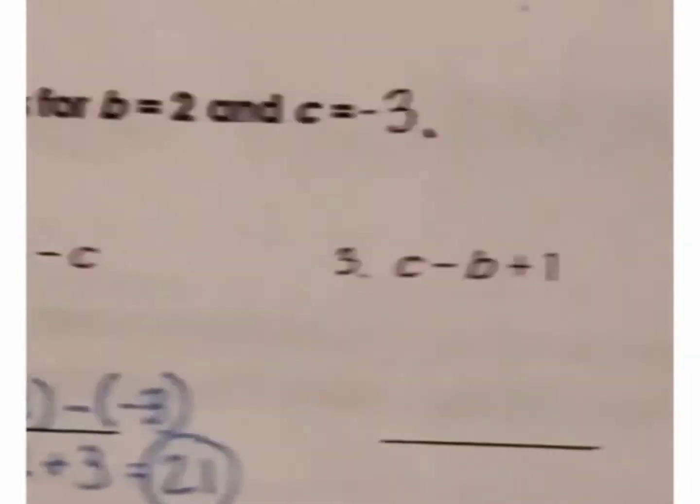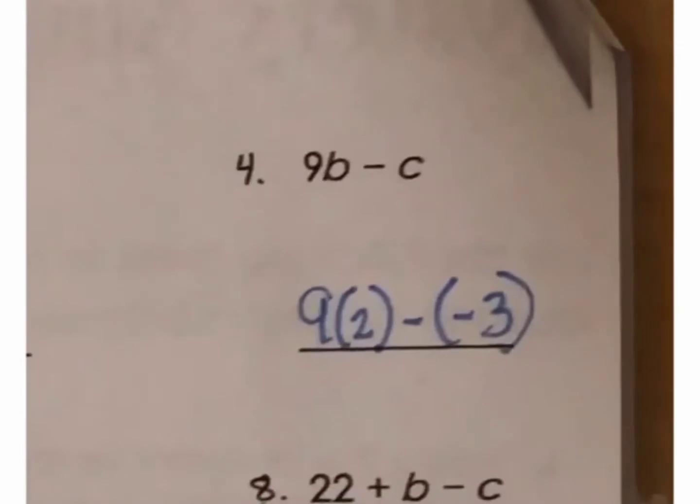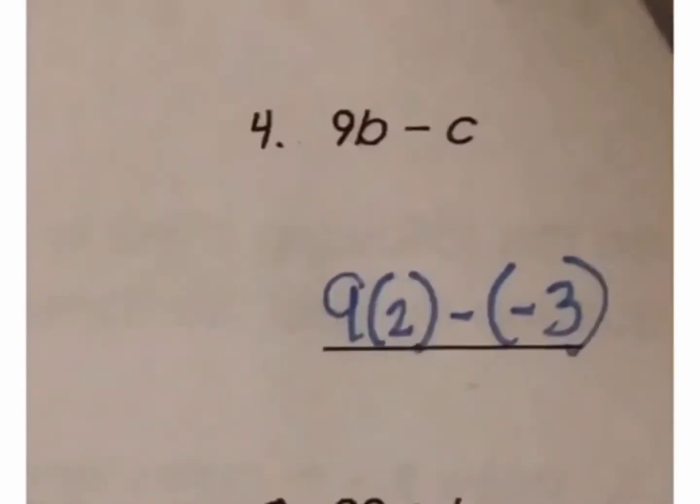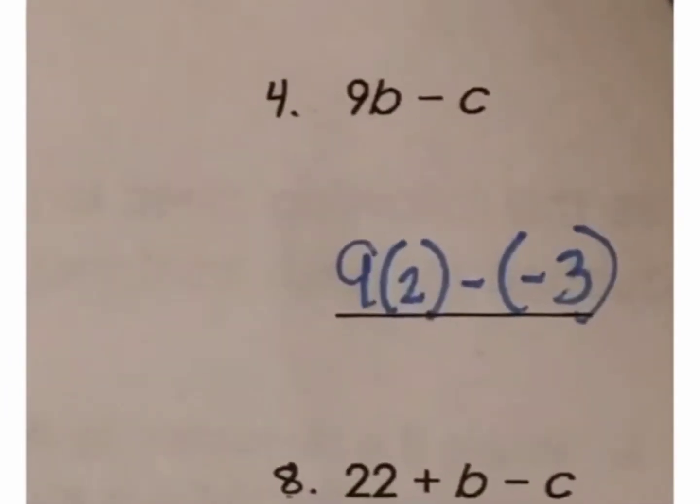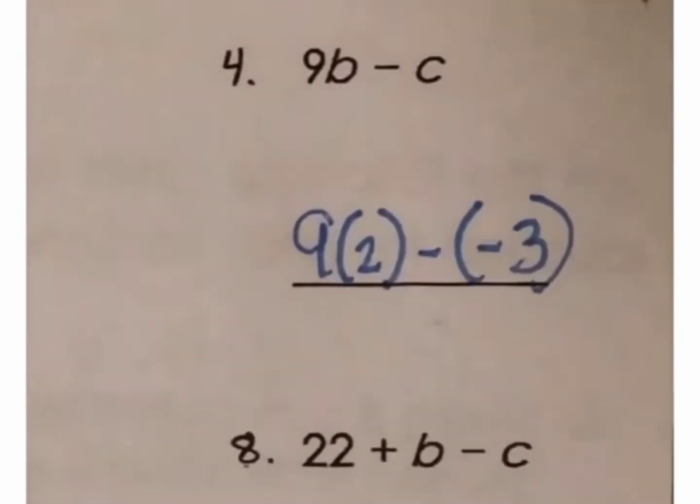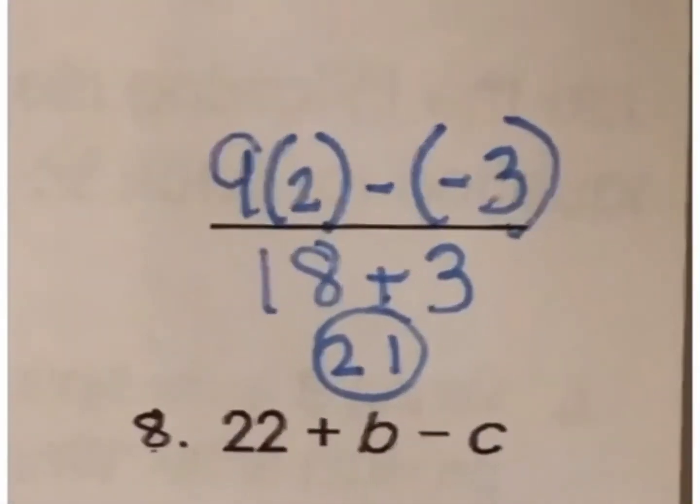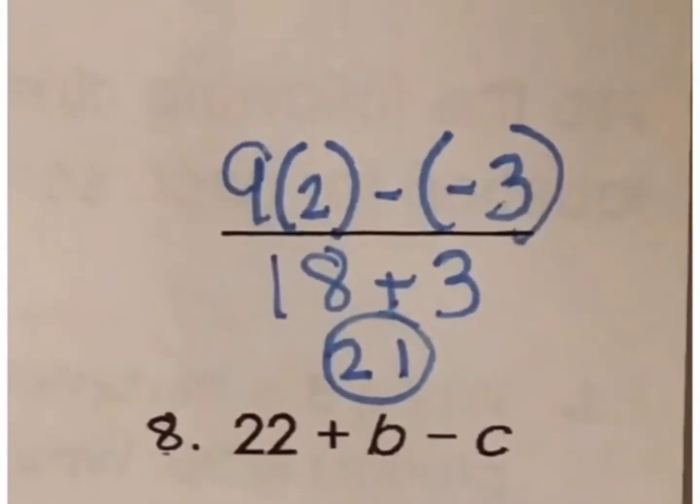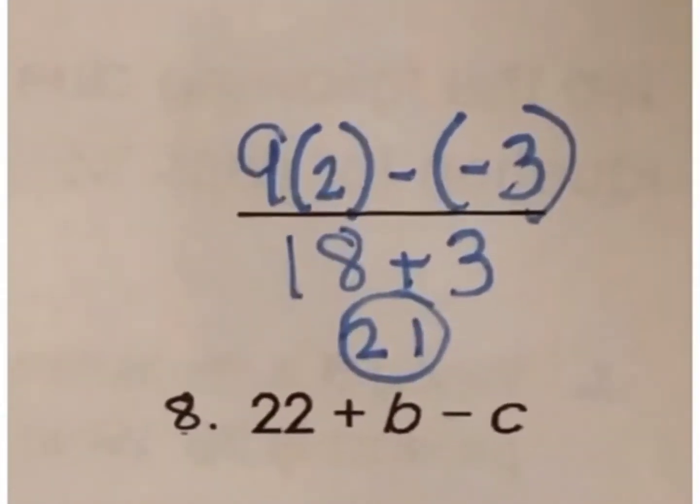Now, I'll come on over to number 4. I substitute, and once again, I've got minus a negative 3. So I end up with 9 times 2 minus negative 3. When you simplify that, it becomes 18 plus 3 equals 21.